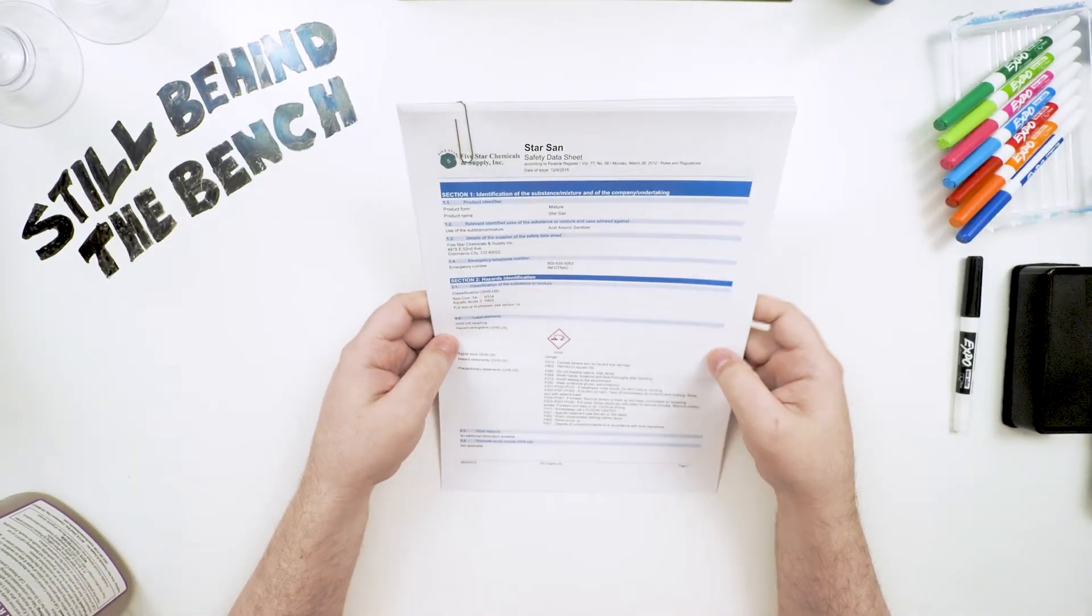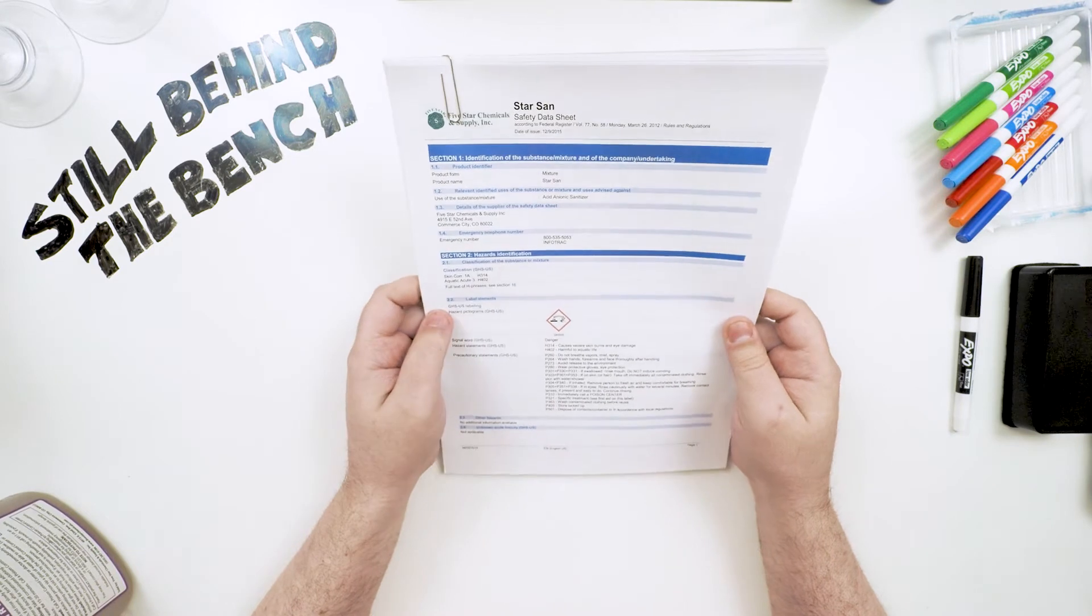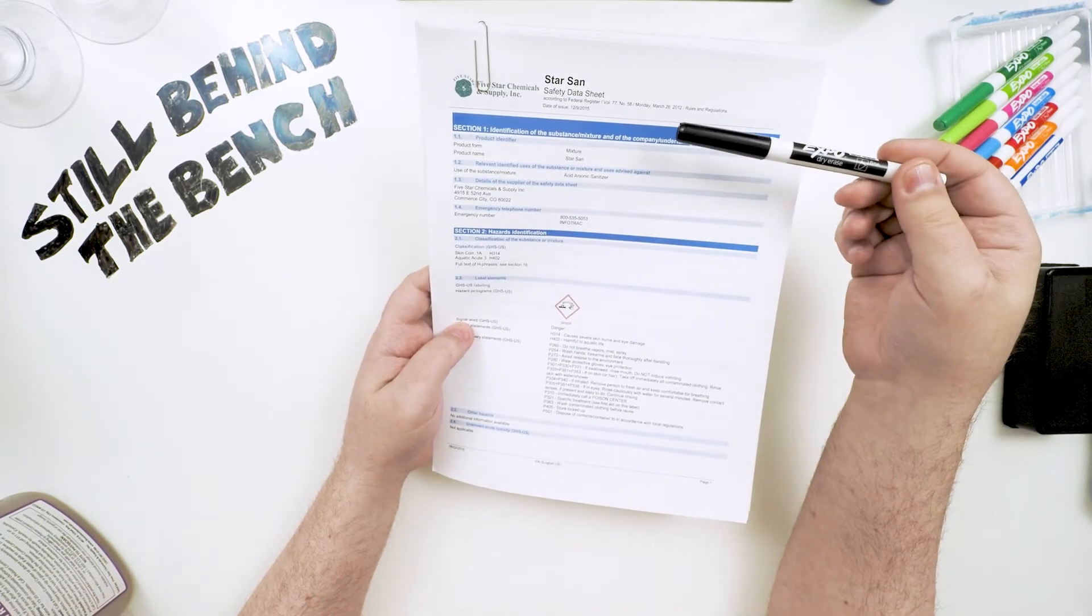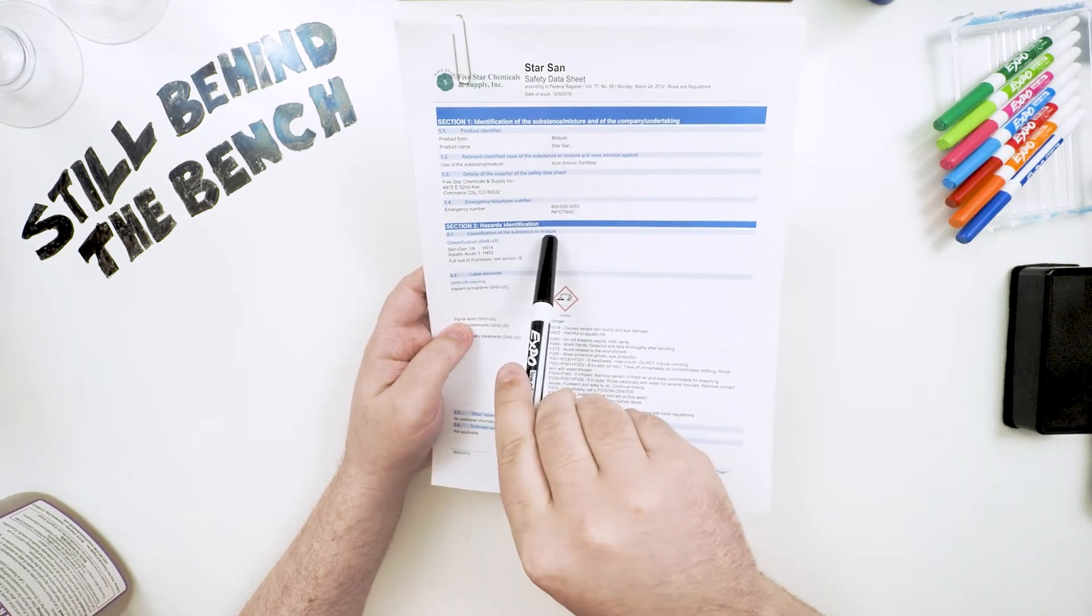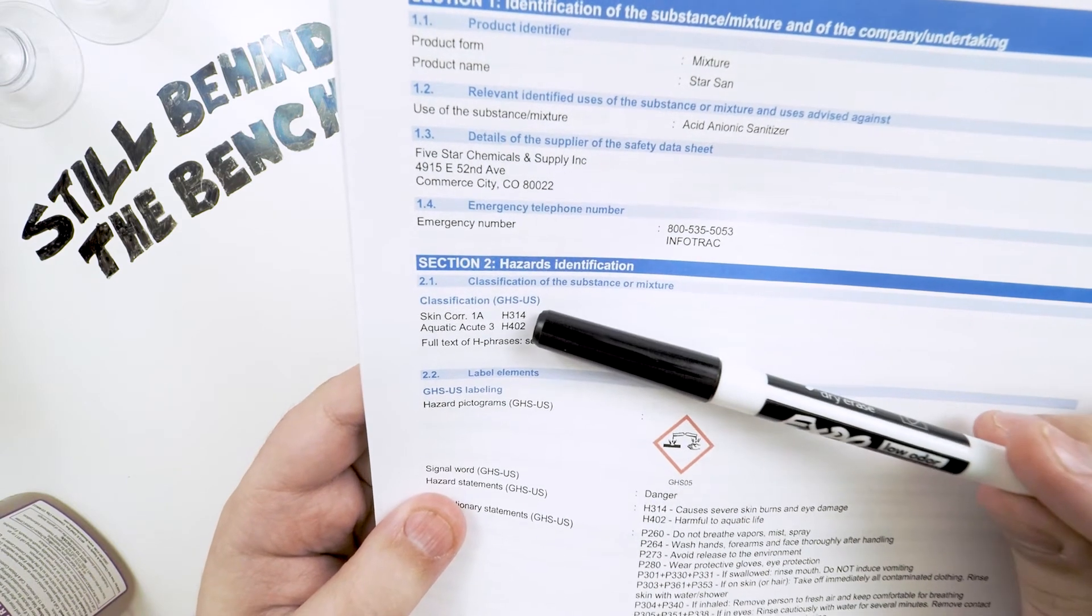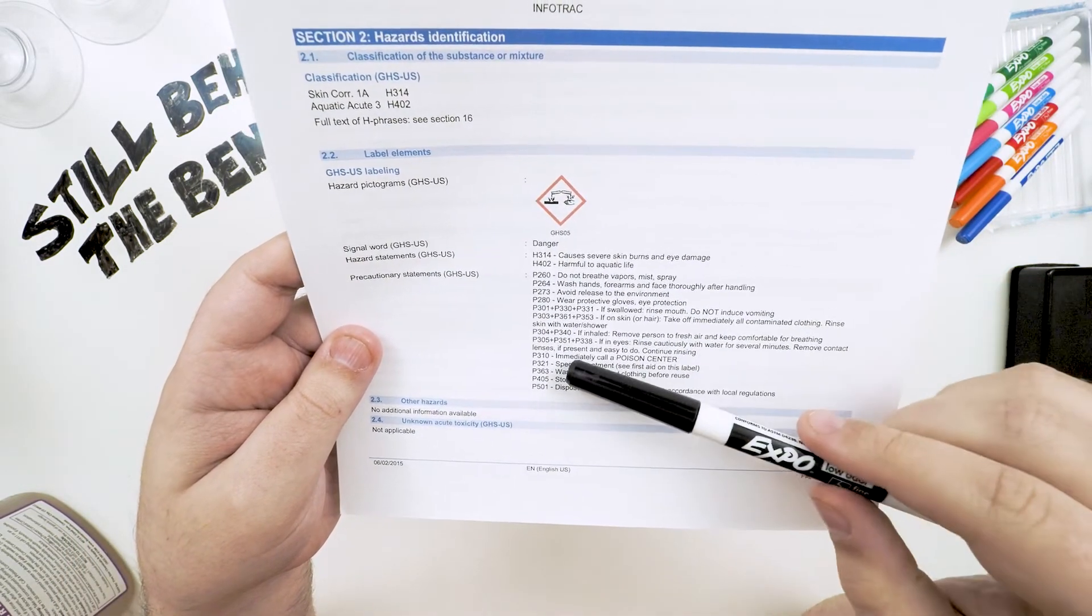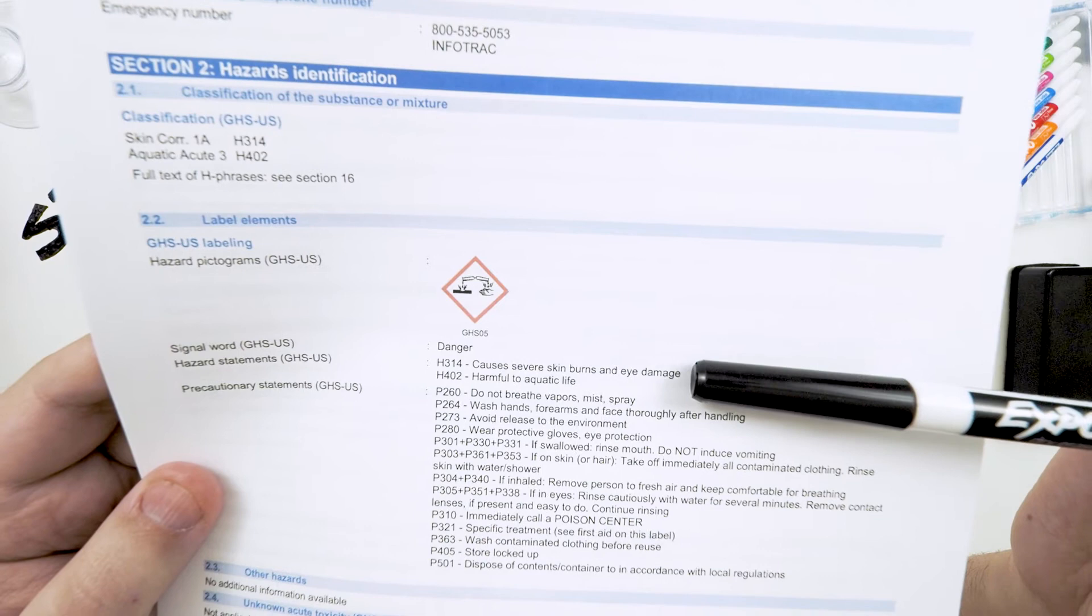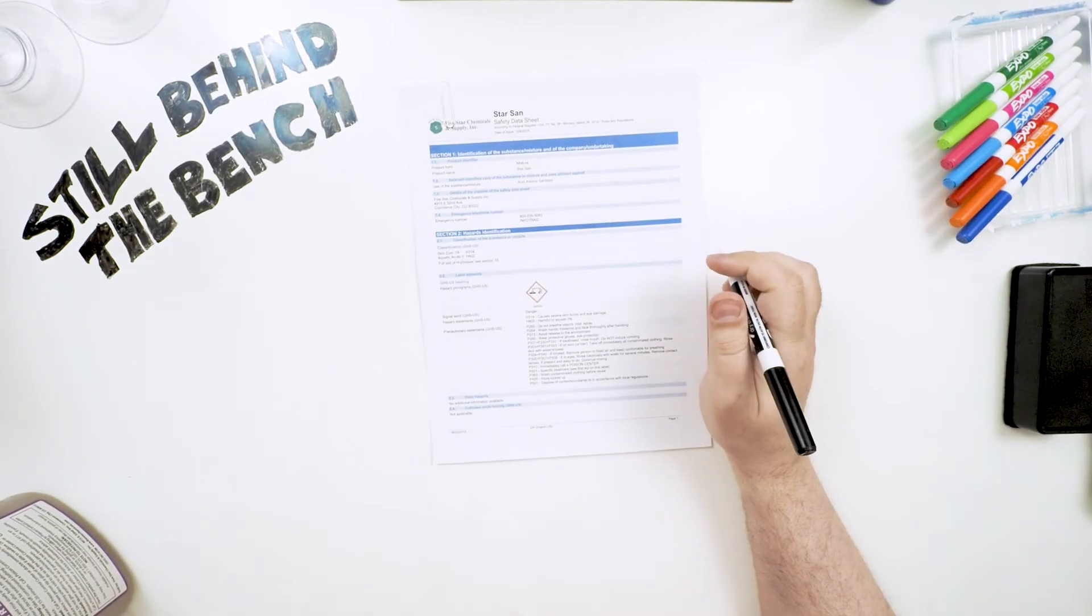This one is for StarSan from Five Star Chemicals because there are a whole bunch of phosphoric acid-based sanitizers. All SDS sheets are standard in what sections contain which information. We are specifically interested in Section 2 Hazard Identification. It has two classifications here. Two H numbers which are hazard numbers. H314 and H402. Below that it gives us a general description of what those hazard numbers mean. H314 causes severe skin burns and eye damage. H402 harmful to aquatic life. So that's as it is in the bottle.